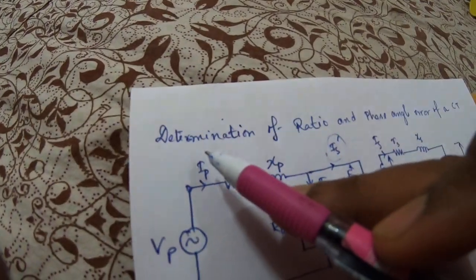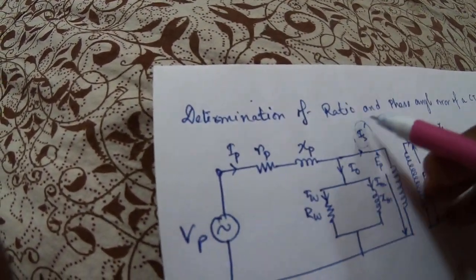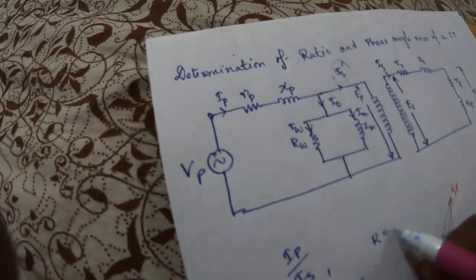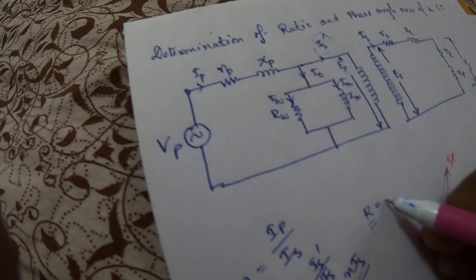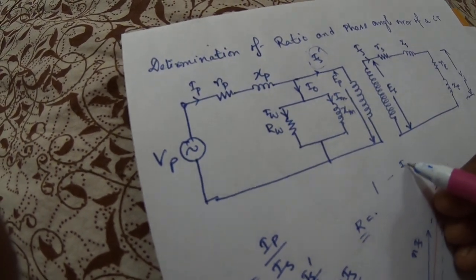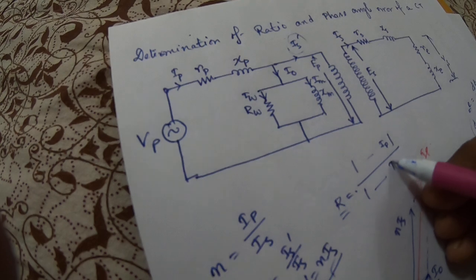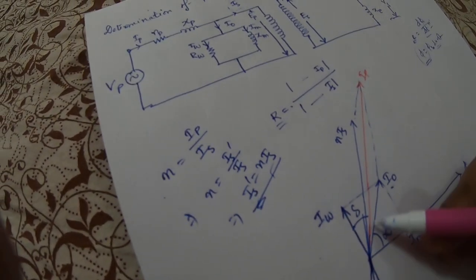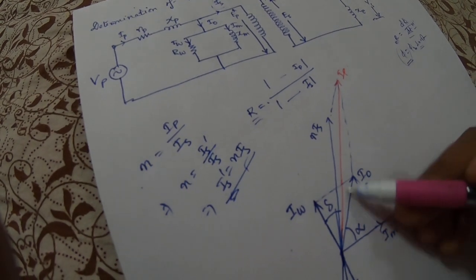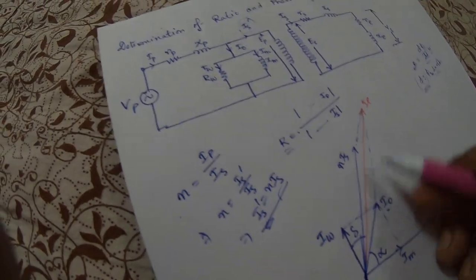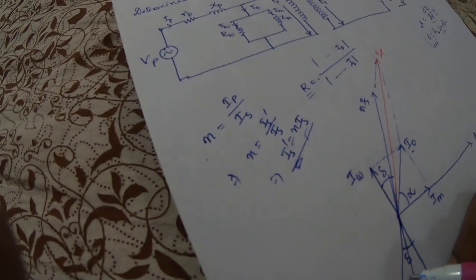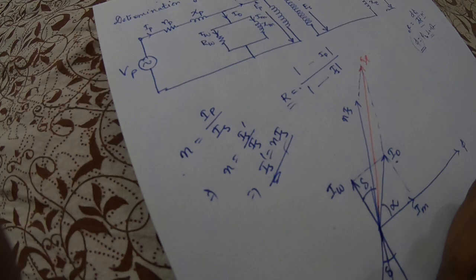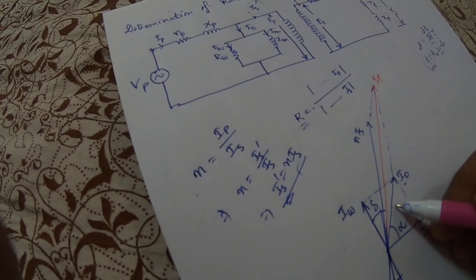Our objective is the determination of ratio and phase angle error. The ratio error uses the nominal ratio R, which is the magnitude of the primary current divided by the magnitude of the secondary current. We calculate the phasor of Ip divided by Is. Let this angle be theta and this angle be delta — so both of these angles are delta.